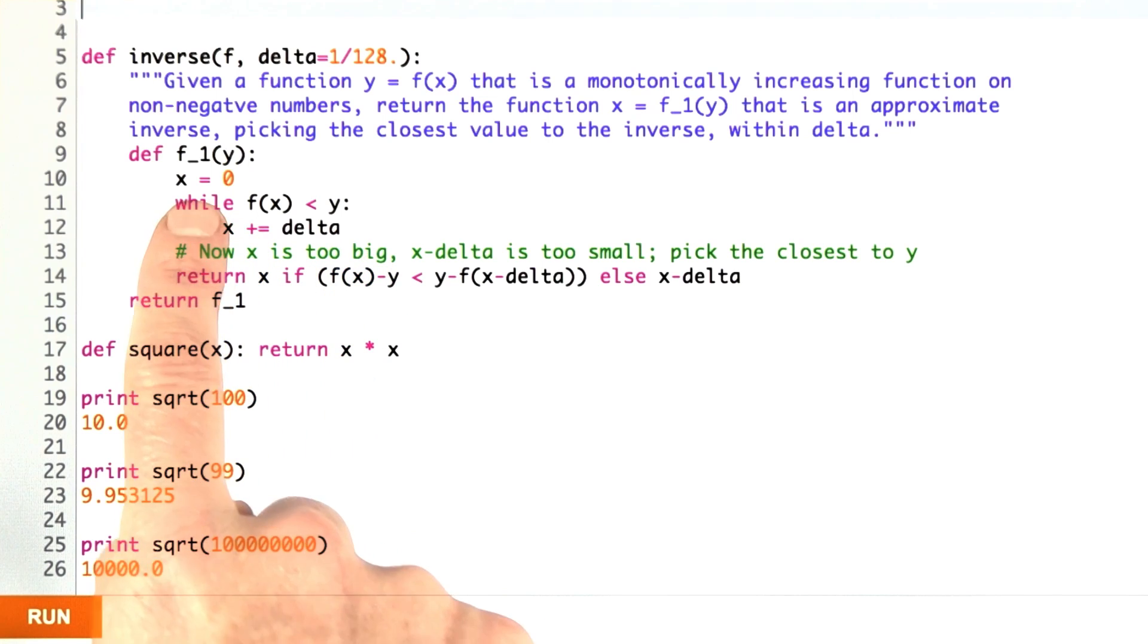The way it figures out what to do is it says let's start at 0 because we said this is the function defined on the non-negative numbers and ask is this f of x greater than the y that's being passed to f1. If it is, let's increment x by a little bit, a little bit being delta.